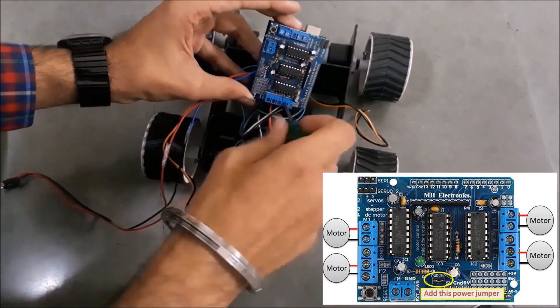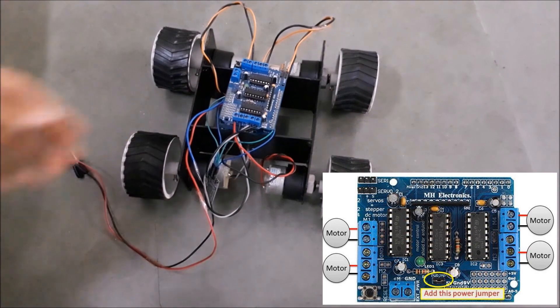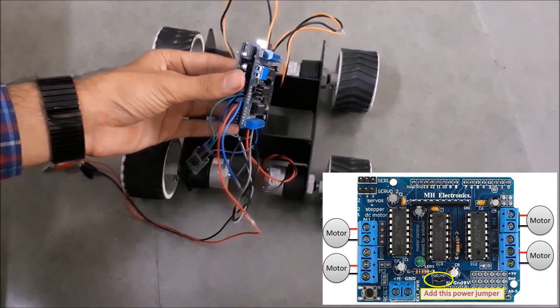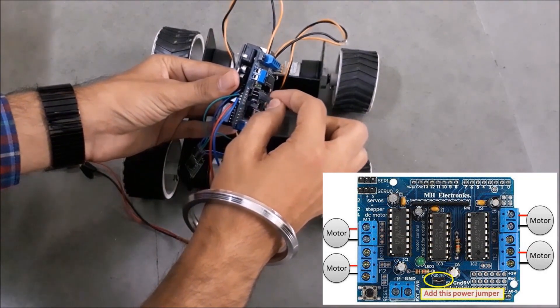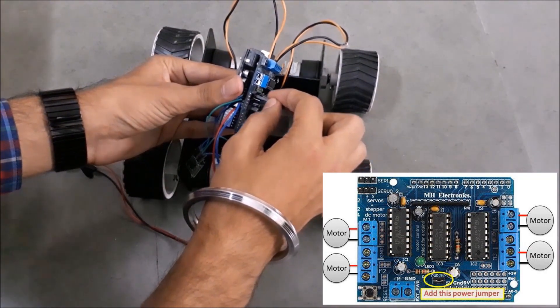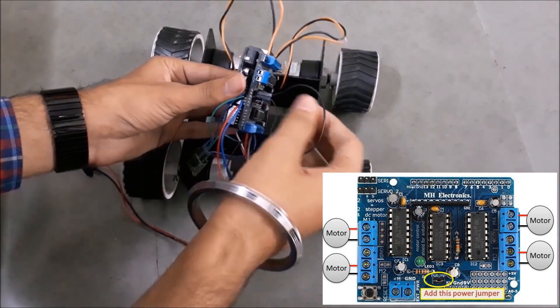The next step is to wire up all the 4 motors with our L293D motor driver shield. Then you need to add a power jumper on the shield.